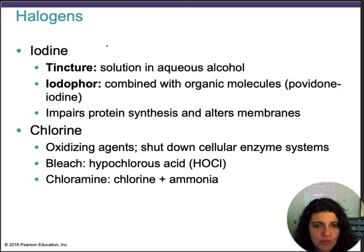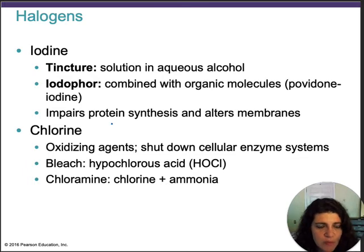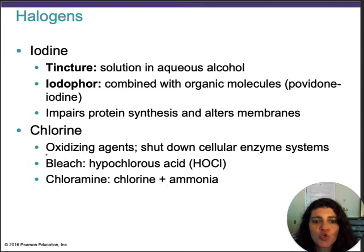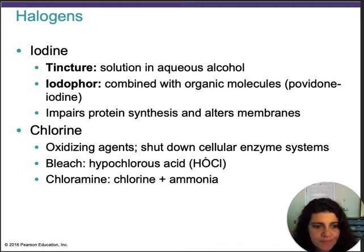Halogens — the two main ones are iodine and chlorine. Iodine is used as a tincture, and is most effective when combined with organic molecules like povidone-iodine. It's used as a hand scrub in hospital settings before surgery, and it impairs protein synthesis and outer membranes. Chlorine is an oxidizing agent — when combined with water like bleach, it forms hypochlorous acid, which is an oxidizing agent that shuts down enzymes.